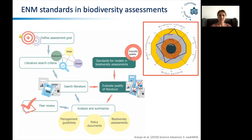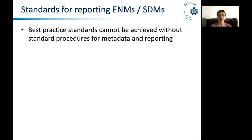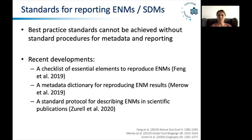Here I want to argue that the very first step for actually establishing standards for models is that we establish standards for reporting models. We can't really judge the quality of a model if we don't find all the information necessary for judging that quality. So best practice standards cannot be achieved without standard procedures for metadata and for reporting. We have seen a few recent developments. Towne Peterson has already named a few of them, and Xiao Feng has already introduced his checklist of the essential elements to reproduce ecological niche models.